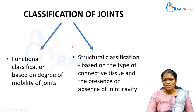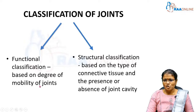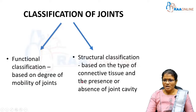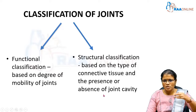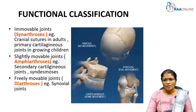Joints can be classified based on the degree of mobility, and also based on the type of connective tissue present between the joints, or the presence or absence of a joint cavity between the two bones.